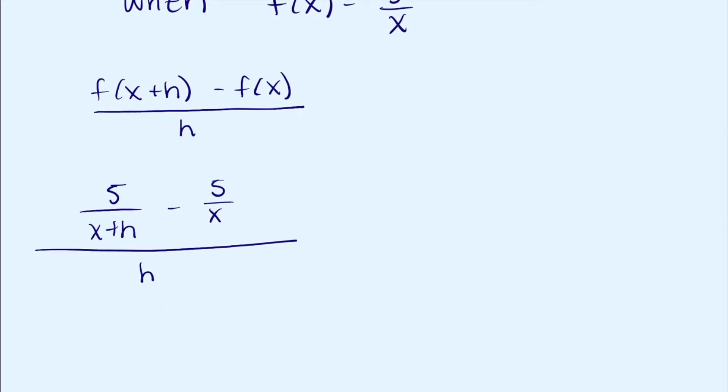The common denominator between the two is going to be x times x plus h. So we'll multiply this side by x plus h over x plus h.